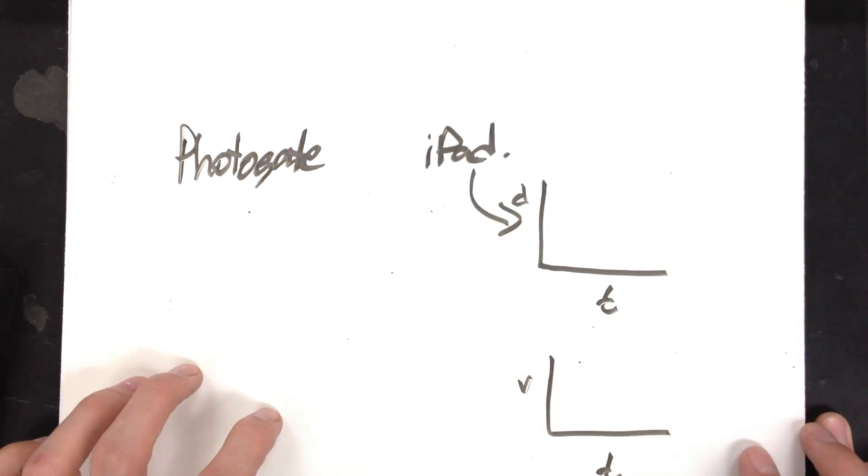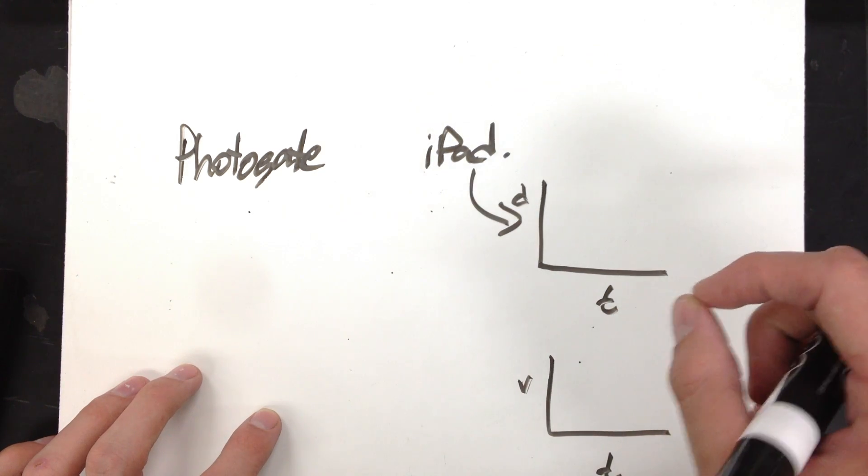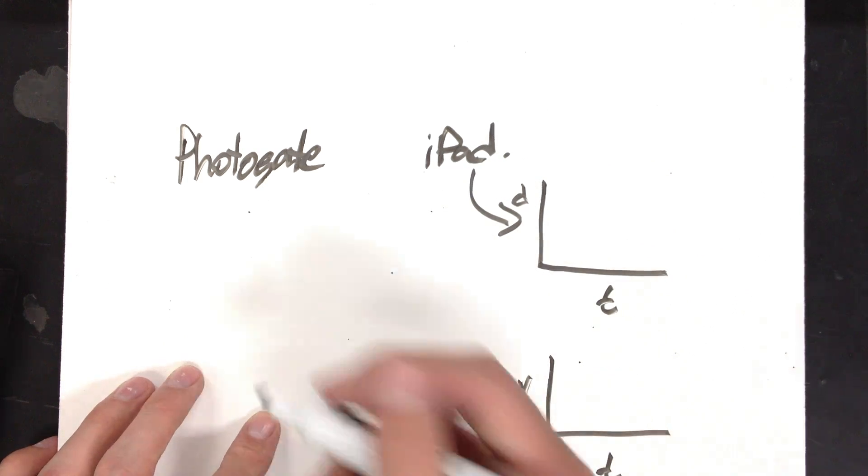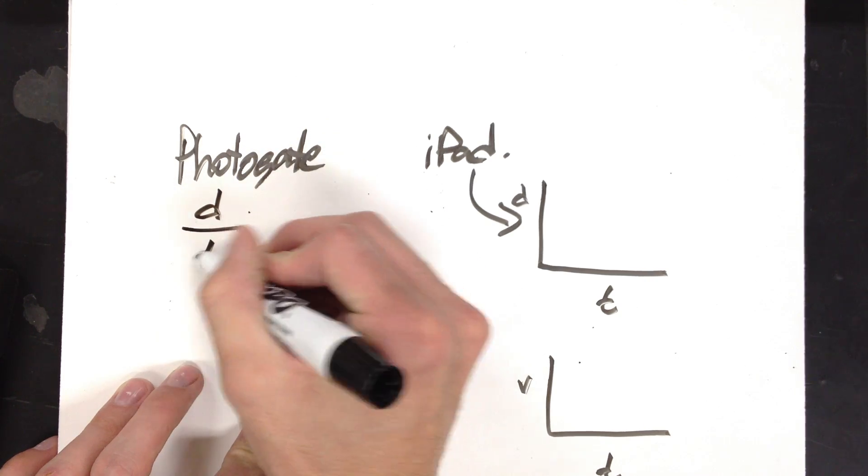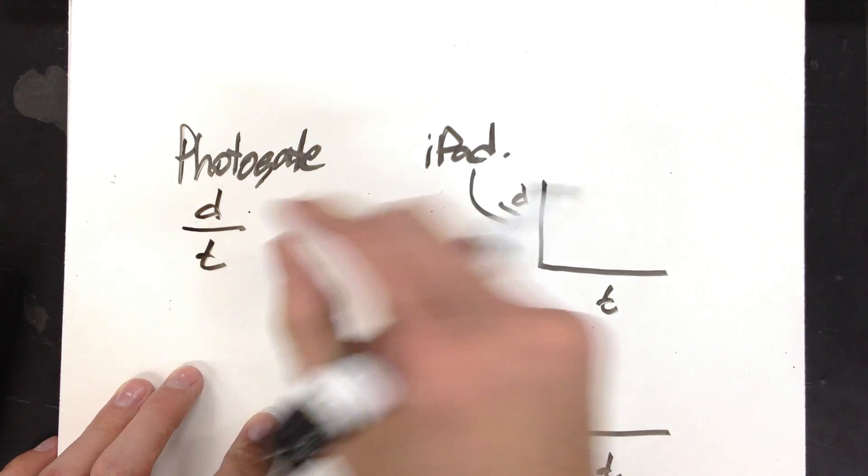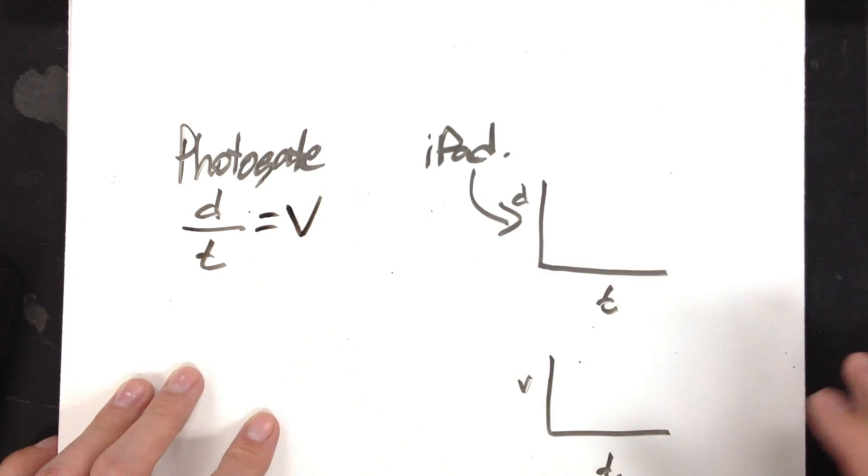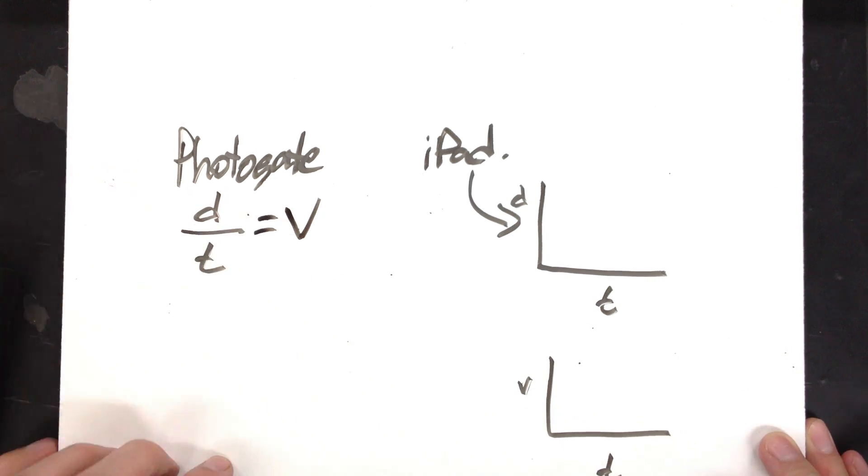With the photo gate, what we're going to do is use it to measure our velocity, actually get a value on that velocity. Your photo gates measure the time blocked. If you know the distance that that thing was blocked, you can get a velocity. That will give us a pretty good approximation of our instantaneous velocity. d over t equals v.